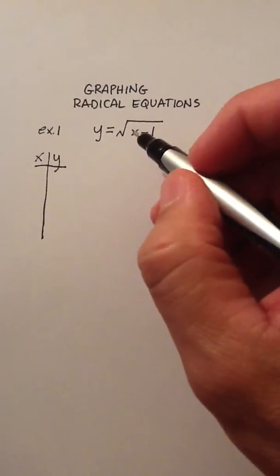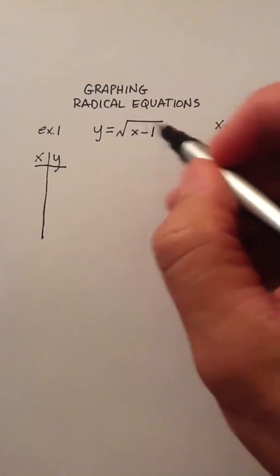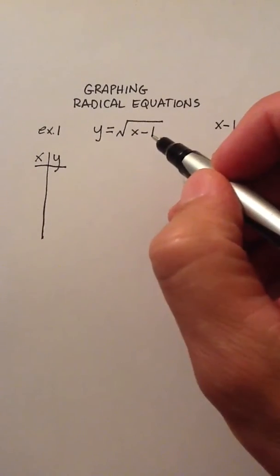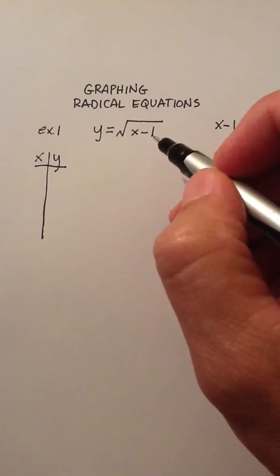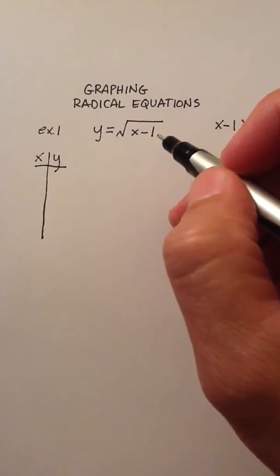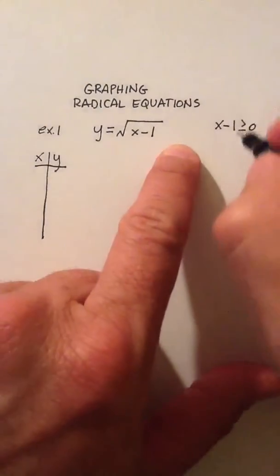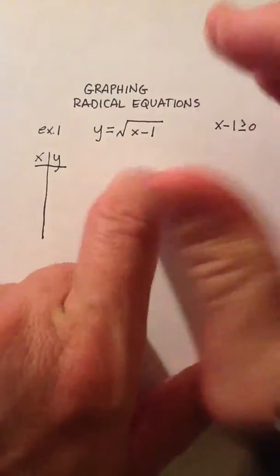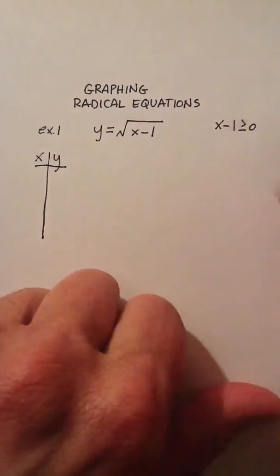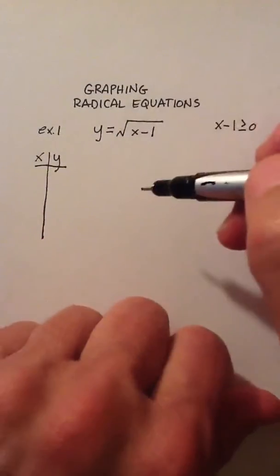Let me show you why. Let's say I chose x was 0. I would get 0 minus 1, and then I'd have the square root of negative 1. And there is no answer for the square root of negative 1 in the real number system. Now, there's something called the imaginary numbers or complex numbers, but we're not talking about that for this particular example.